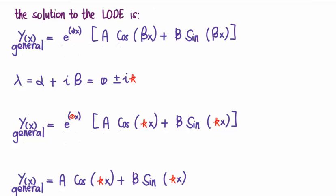Well, we know that the most general solution to this type of equation is the following expression. Y general is e to the alpha x outside of a cos beta x plus b sine beta x.